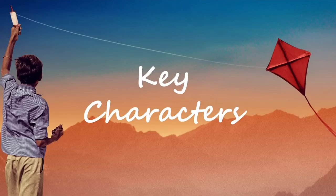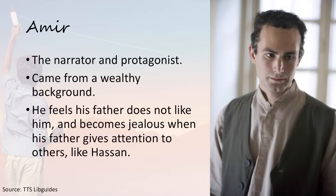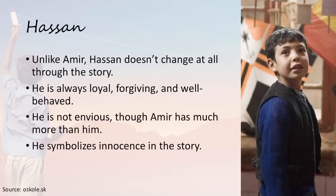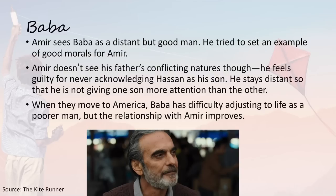The key characters are really important for understanding the novel. Amir is the narrator and protagonist — from a wealthy background in Afghanistan, he feels his father doesn't like him, and becomes jealous when his father lavishes attention on others like Hassan. Hassan, unlike Amir, doesn't change throughout the story — he's always loyal, forgiving, and well-behaved, not envious despite Amir having much more, and he symbolises innocence. Baba is another important character: Amir sees him as a distant but good man who tries to set an example of good morals. Baba feels guilty for never acknowledging Hassan as his son, and stays distant so as not to favour one son over the other. When they move to America, Baba has real difficulty adjusting to life as a poorer man, but his relationship with Amir improves.